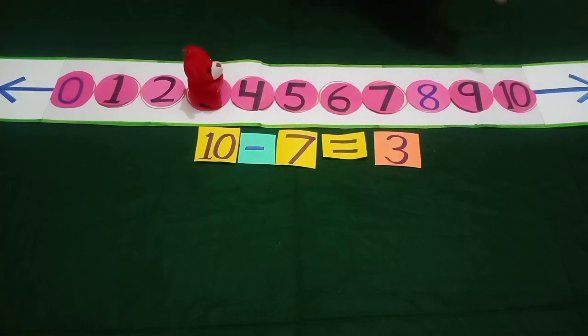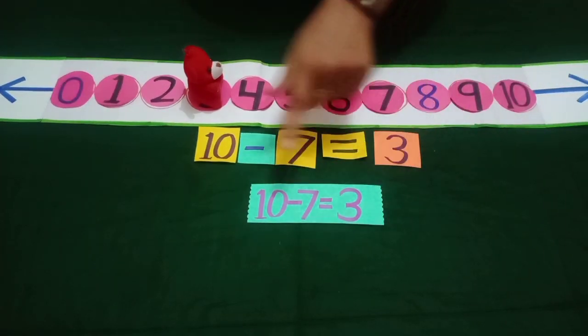So students, when we do subtraction, we go from right to left on this number line with the help of backward counting. We get three after subtracting seven from ten.